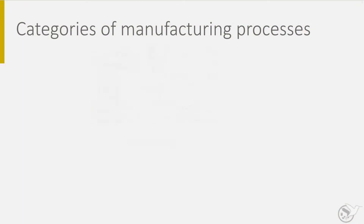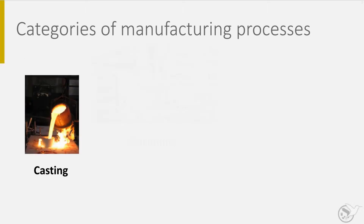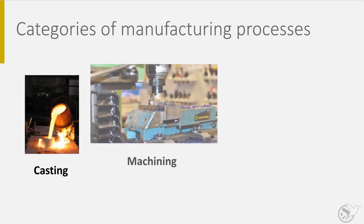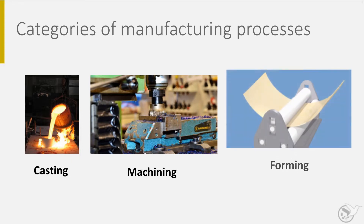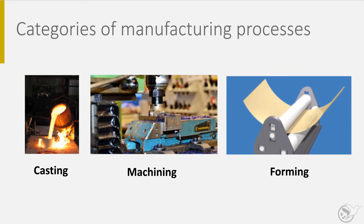When talking about metals, there are three major manufacturing categories I would like to discuss: casting, machining and forming. Each of these categories will be explained briefly and each category is based on a typical material property.